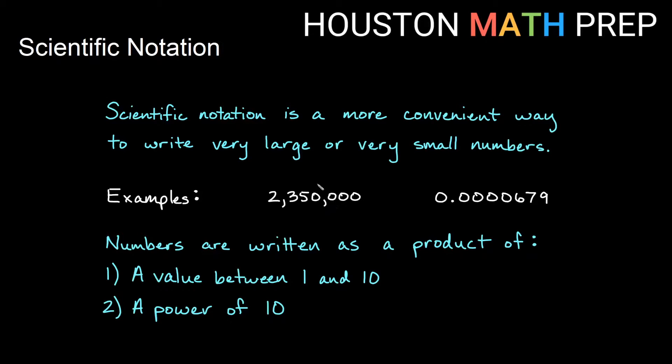Some examples might be numbers in the millions or bigger, or numbers that have a lot of decimal places. Numbers in scientific notation are written as a product of two things: a number between 1 and 10 times some power of 10.